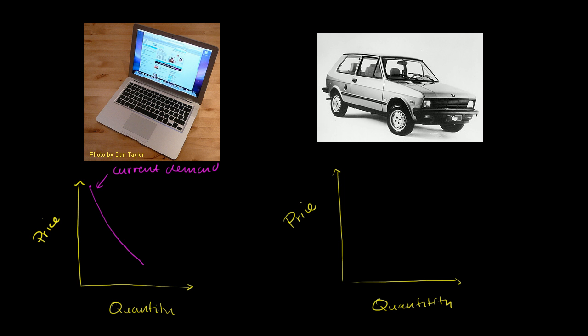Now we could draw a similar demand curve for this very cheap automobile. If the price is high, very few people are going to want to buy it. And I'm not going to even specify what the price is, but this is a general idea. If the price is higher, fewer people are going to want to buy it. If the price is lower, more people are going to want to buy it. So its demand curve will also have this shape from the top left to the bottom right. It satisfies the law of demand. So once again, that is the current demand.